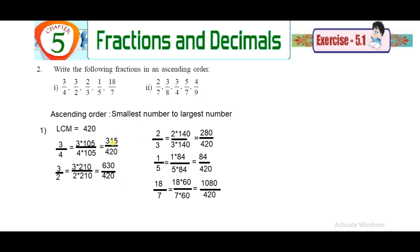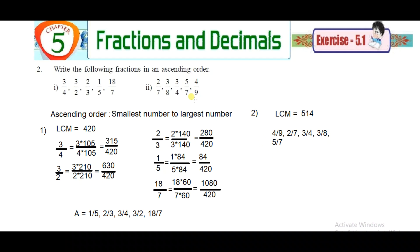Now compare the numerators. For ascending order — smallest to largest — find the smallest numerator. The smallest is 84, which corresponds to 1/5. Next smallest is 280, which is 2/3. Then 315, which is 3/4. Then 630, which is 3/2. Last is 1080. So the ascending order is 1/5, 2/3, 3/4, 3/2, and 18/7. Similarly, solve the second sub-problem: the ascending order is 4/9, 2/7, 3/4, 3/8, and 5/7.